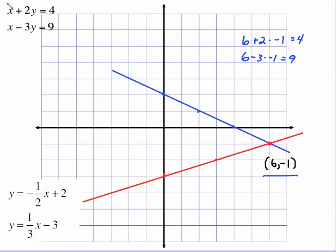We're going to check that by putting 6 in for x and negative 1 in for y. So this is 6 plus 2 times negative 1 — does that equal 4? Yes, because this is 6 minus 2 equals 4 — it works. Put 6 in for x and negative 1 in for y: negative 3 times negative 1 is a positive 3, and 6 plus 3 is 9. So that is our point of intersection and the solution to this system of equations.